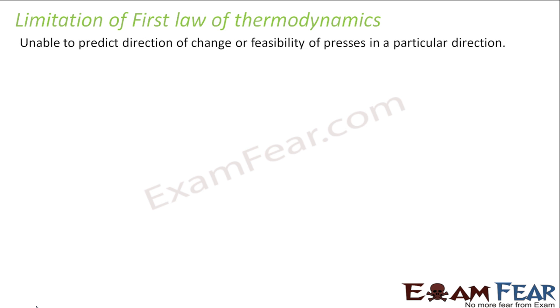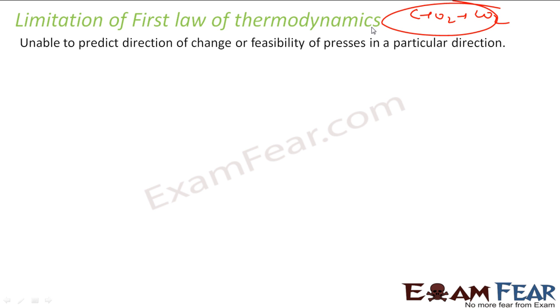The first limitation is that it is unable to predict the feasibility of a particular reaction. For example, if I have a reaction C + O = CO₂, it can't tell whether this reaction will happen or not — it can't predict that feasibility.